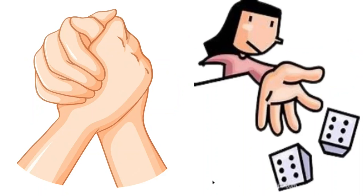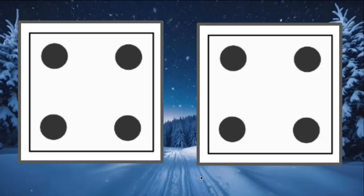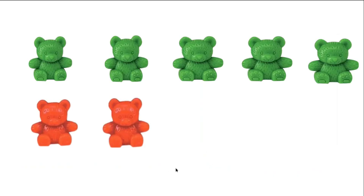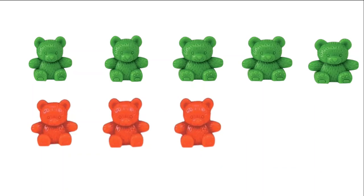Get ready. Shake, shake, shake. How many dots are on my dice? Yes, eight. Now we're going to make our counters equal to eight. How many did we have before? Yes, seven. What do I need to do to make eight? Did you say add more bears? You're correct. I add one more bear. Now I have — five, six, seven, eight.